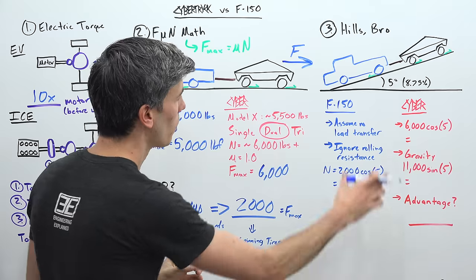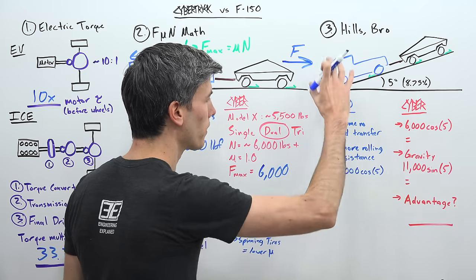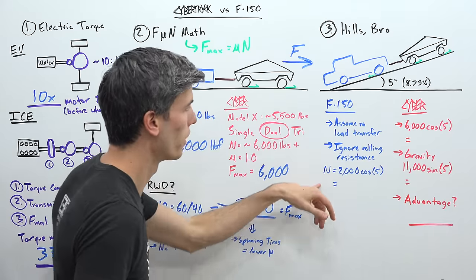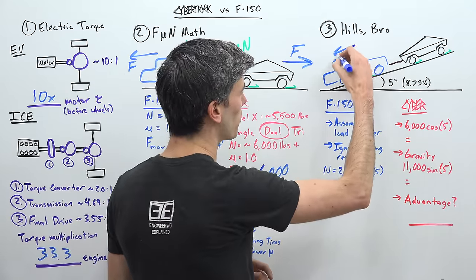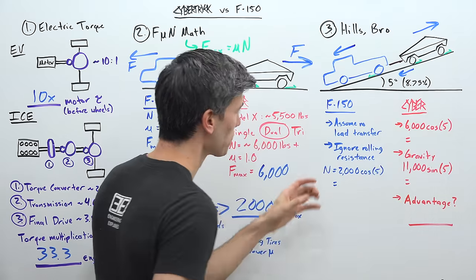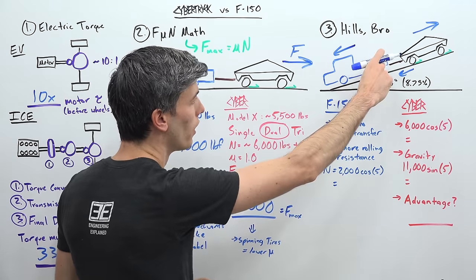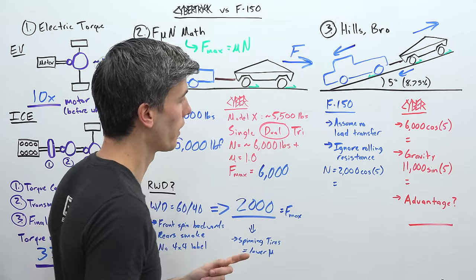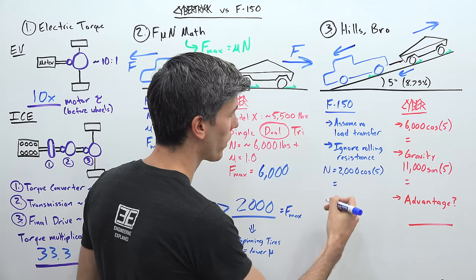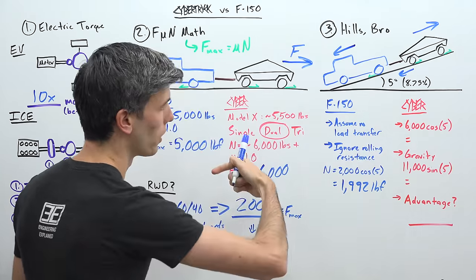And for the F-150, we're going to assume no load transfer. This makes the math a little bit easier, but also gives a slight advantage to the F-150 in this scenario. And then we're also going to ignore rolling resistance, because it doesn't change the math all that much. So once again, we need to calculate our forces. For the F-150, that force is 2,000 pounds. That's the amount of weight we have resting on those rear tires, the driven tires. And then we're multiplying that by cosine of 5 to get our component in this direction. And so that is going to give us 1,992 pound force.